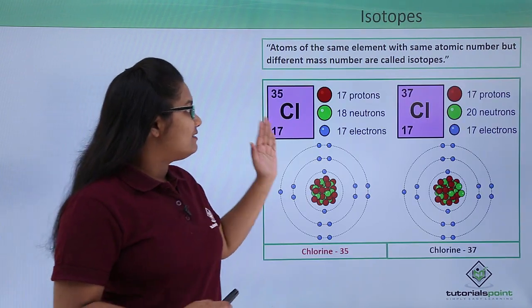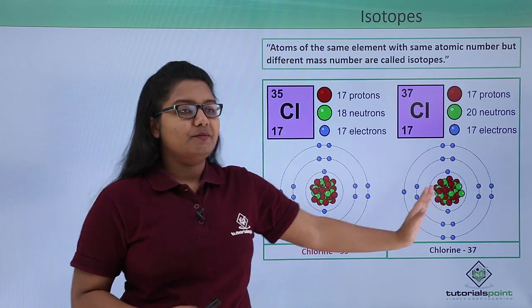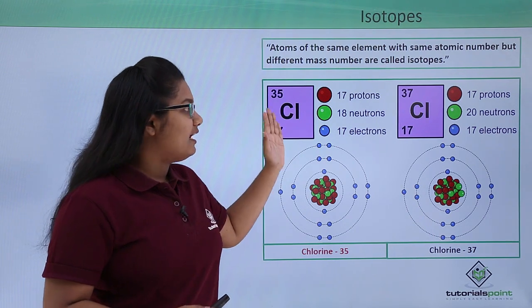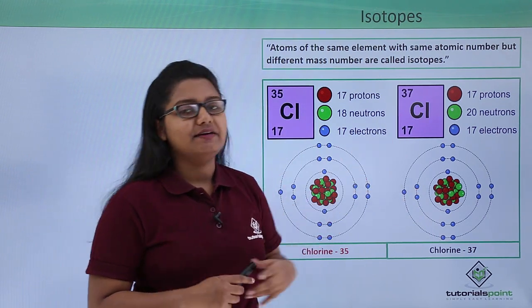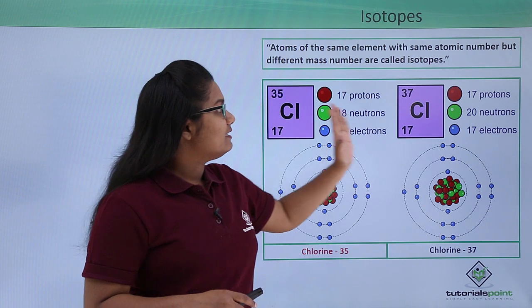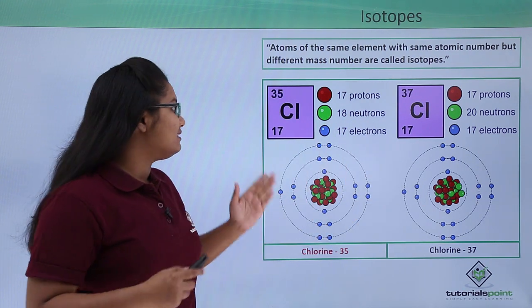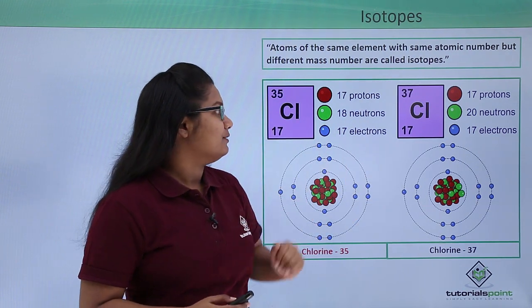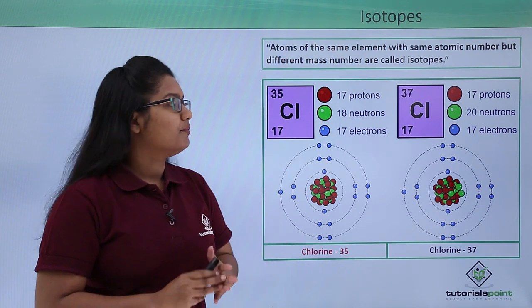Now chlorine exists in two isotopic forms: chlorine-35 and chlorine-37. Both these isotopes of chlorine have the same atomic number, that is 17, because they have equal number of protons.